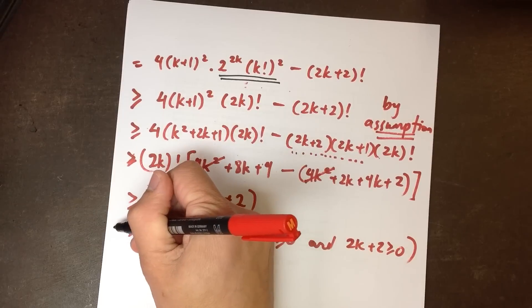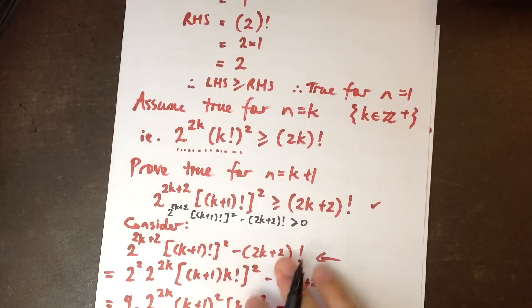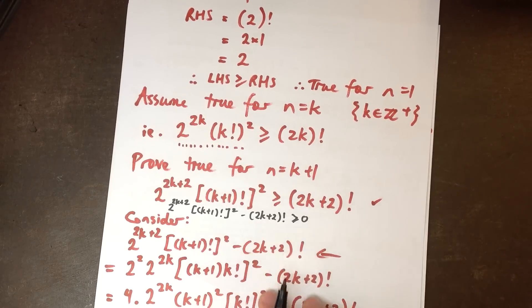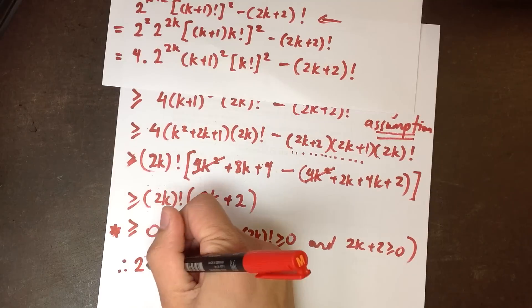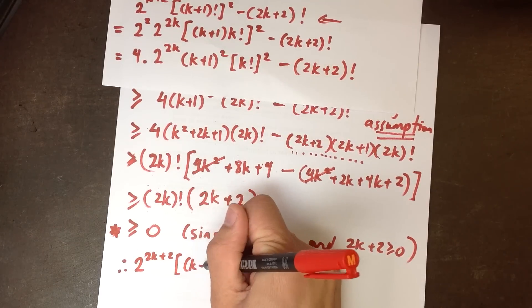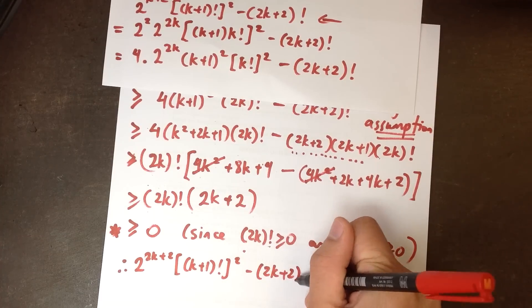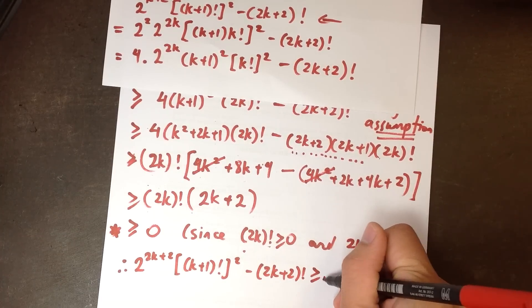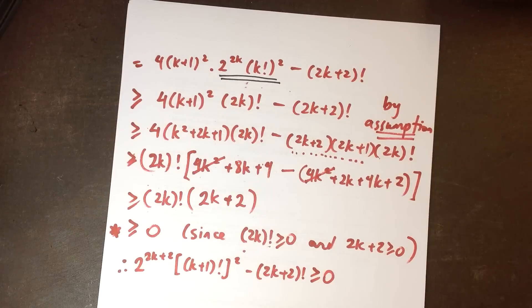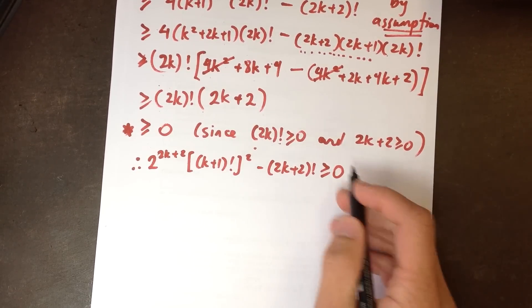Therefore, whatever I started with is greater than 0. What did I start with? I started with 2 to the 2k plus 2 multiplied by k plus 1 factorial all squared, minus 2k plus 2 factorial. All of that is greater than or equal to 0. So now I can kick that term over to the other side.